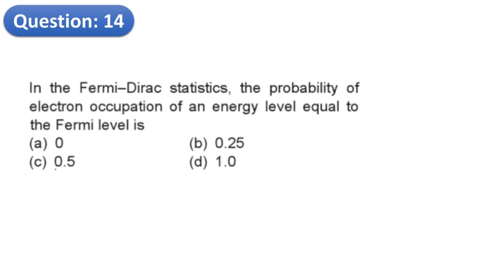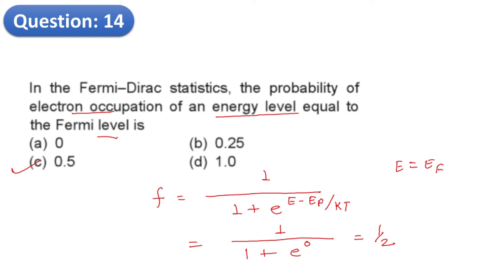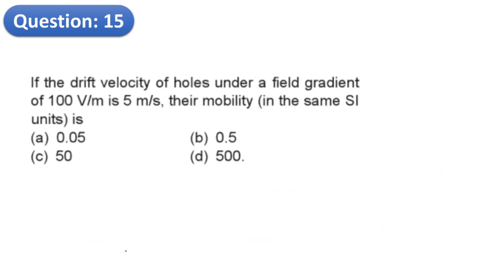Question 14: In Fermi-Dirac statistics, the probability of electron occupation of an energy level equal to the Fermi level. The Fermi-Dirac function f(E) equals 1 divided by (1 plus e to the power (E minus Ef) divided by kT). When E equals Ef, the exponent becomes zero, giving f = 1/(1+1) = 1/2 = 0.5. The correct option is C, which is 0.5.